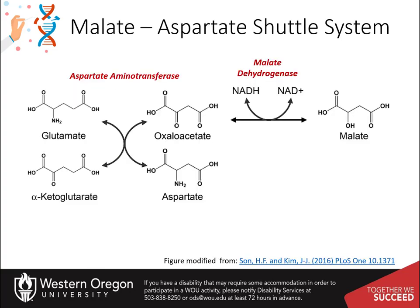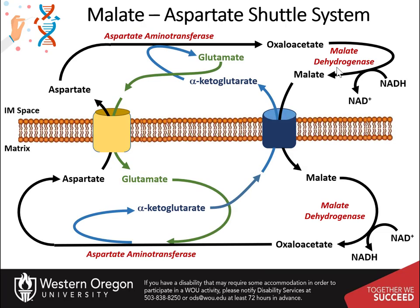The malate-aspartate shuttle system is dependent on the functioning of two enzymatic processes. The first is the aspartate aminotransferase enzyme, which can utilize glutamate as an amine donor to generate aspartate from oxaloacetate. Alpha-ketoglutarate is also formed in this process. Depending on substrate concentrations and other regulatory mechanisms, this enzyme can also work in the reverse direction to produce glutamate and oxaloacetate. In a different reaction using malate dehydrogenase, oxaloacetate can be reduced to form malate using a molecule of NADH as the electron donor.